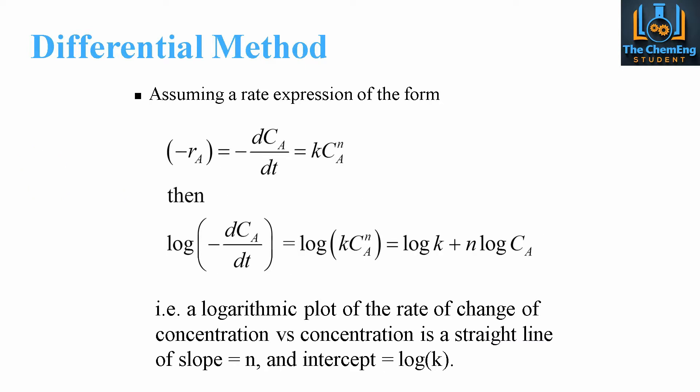If we begin to model this, the reaction rate is minus RA. We've seen this several times throughout the course: minus dCA over dt will equal k CA to the power N, where N is the reaction order.